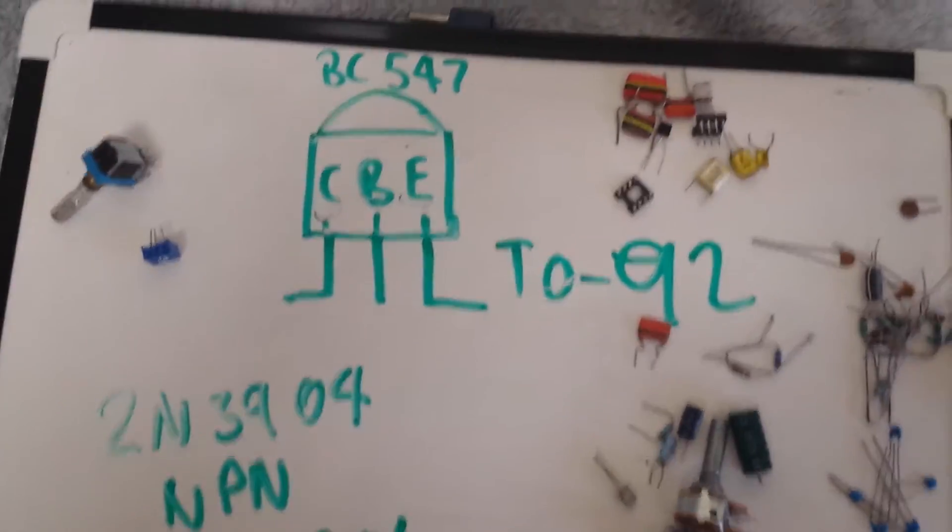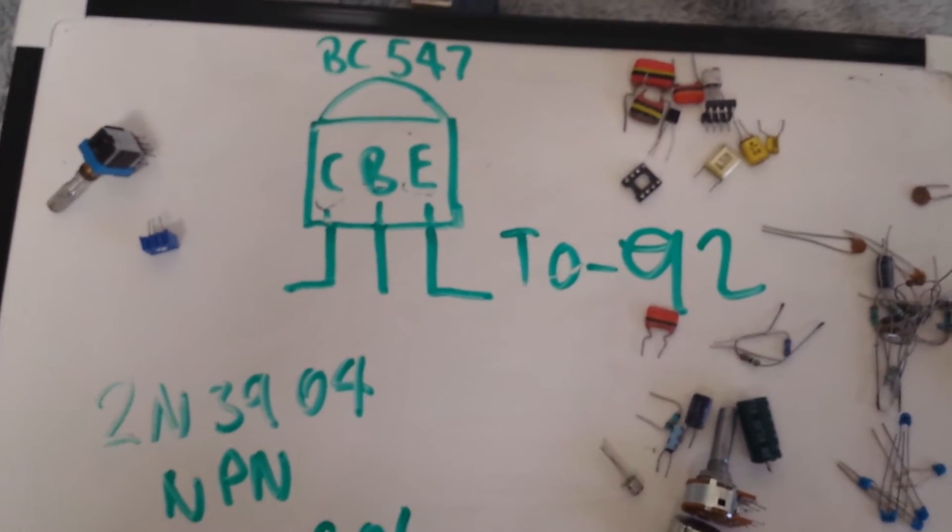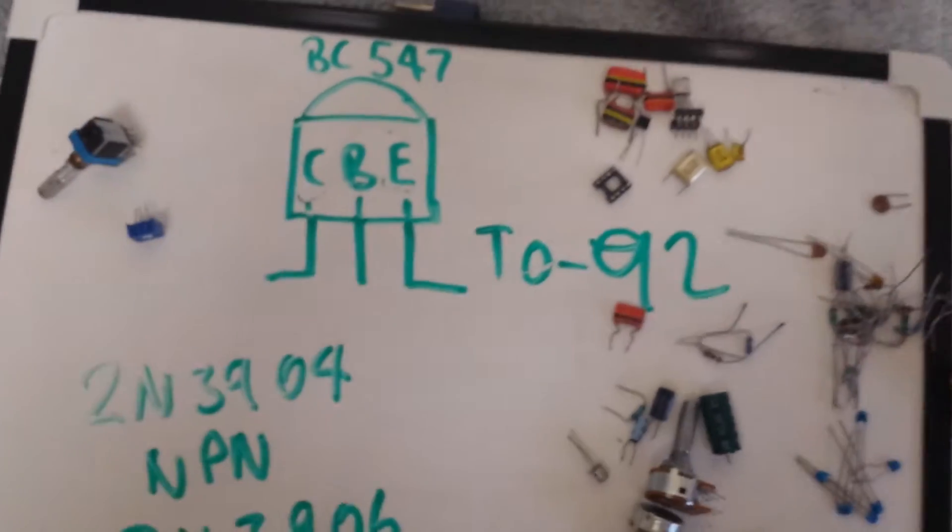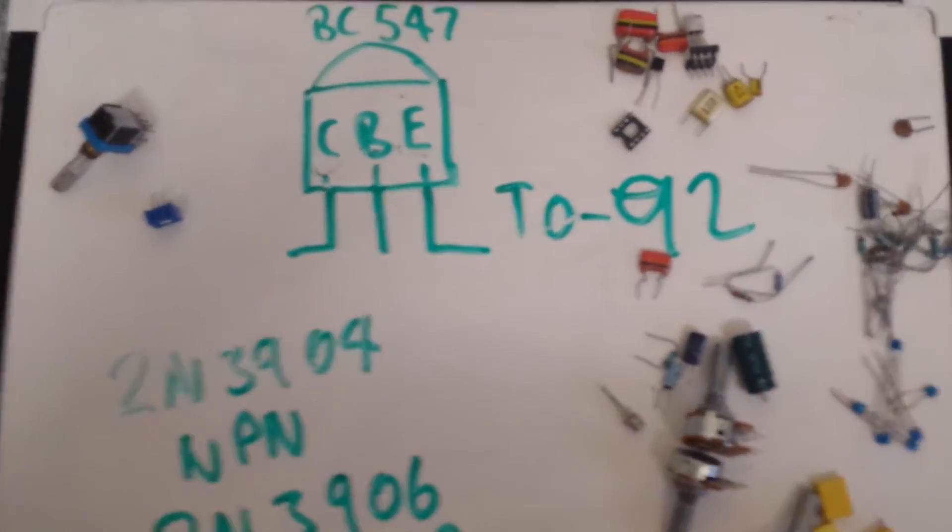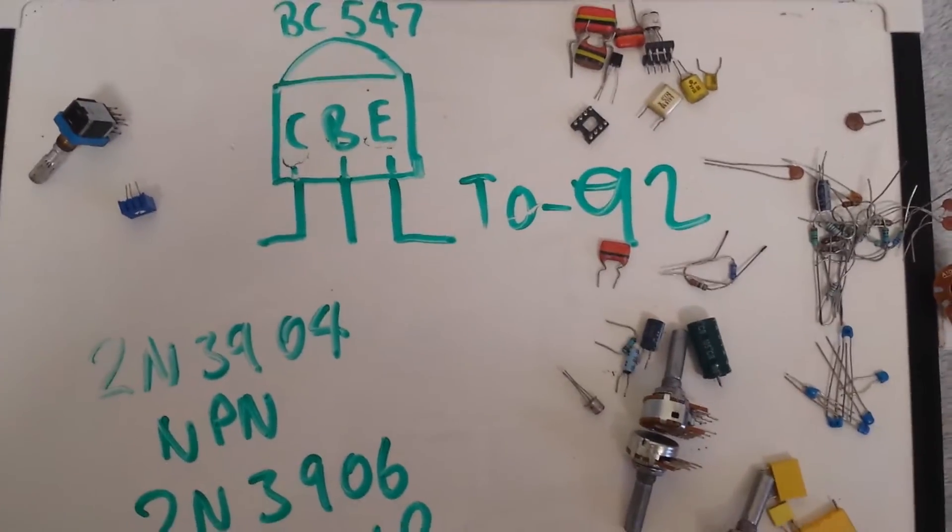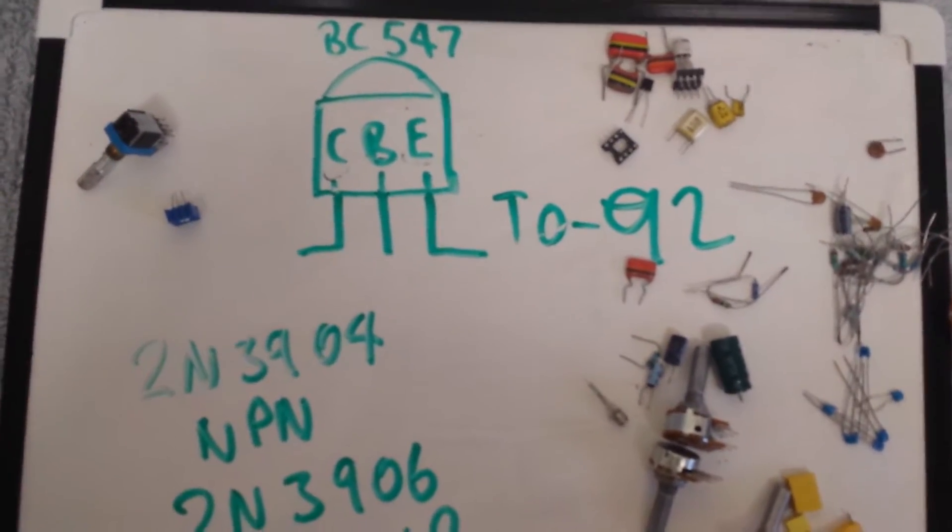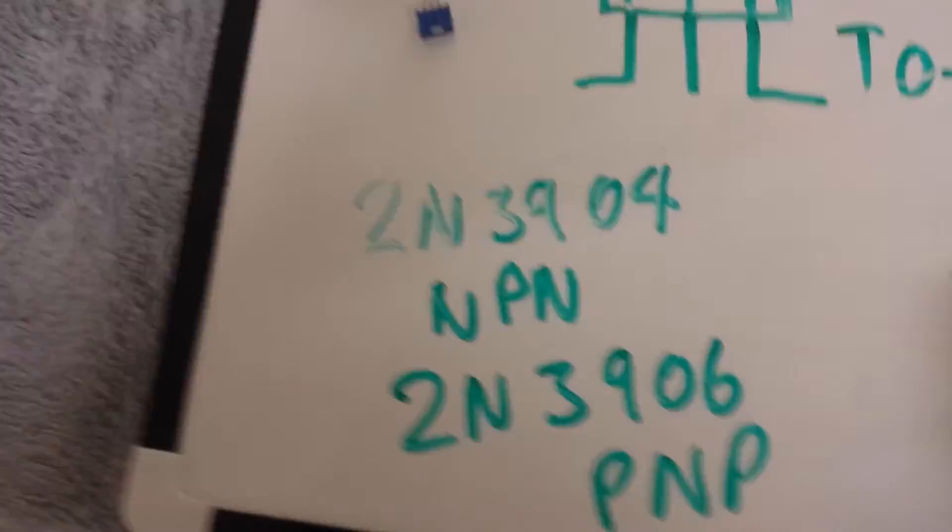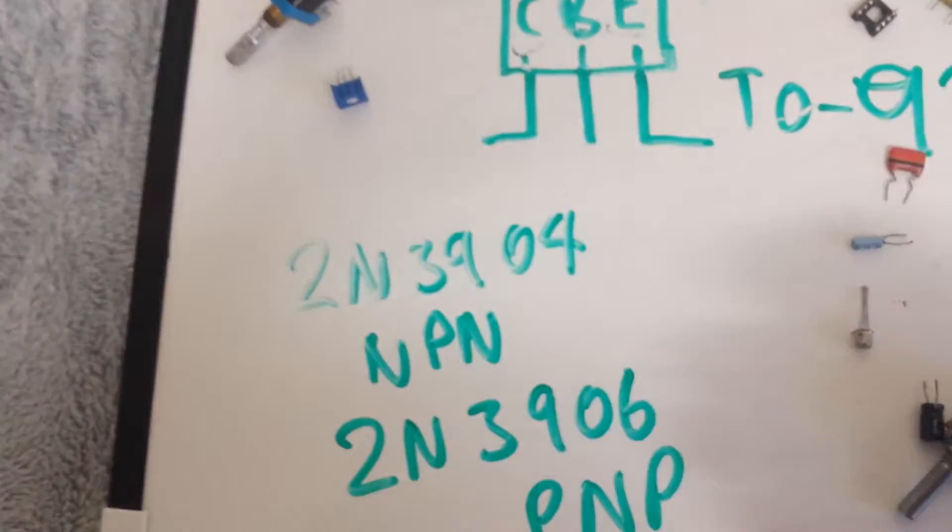General rule with resistors is the last band if it's gold that will be the last band which denotes the tolerance, sorry not the tolerance the accuracy. Gold band will be about 5% accurate and the brown will be 1% which are normally the blue colour resistors, carbon resistors.